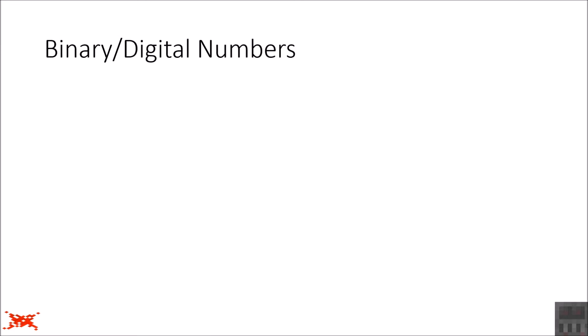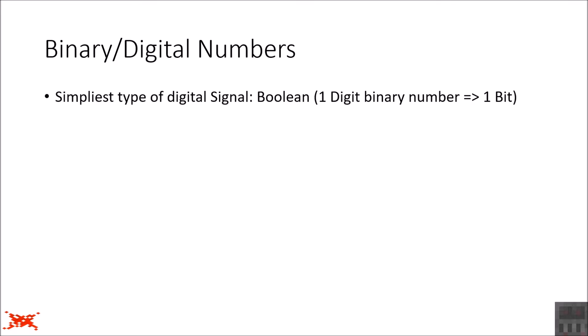As shown on the previous page, digital signals have discrete values, which means you can represent them as numbers. Due to the way modern information technology and computers work, those numbers are usually binary numbers. We already know the simplest digital signal, which is a Boolean signal — that can have two possible values, 0 and 1 — and since you can represent this as a one-digit binary number, this is also called a one-bit digital signal. One bit means a single-digit binary number.